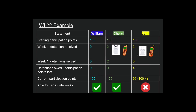Jen says, you know what, I got two detentions but I'm not going to serve them. It's the end of the week — we double them. Two times two is four, so she owes four detentions now and lost four participation points. 100 minus four gives her 96. If you have 100 points when I check your late work, are you able to turn it in? William can do it, Cheryl can do it — she served her detentions — but Jen's going to start stacking up. She cannot turn in late work because she has not served her detentions.